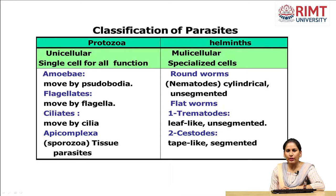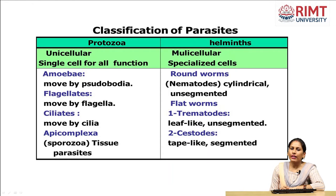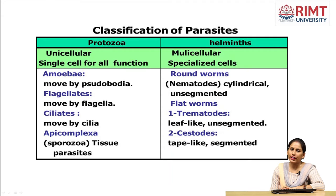Nematodes are cylindrical and unsegmented, also known as roundworms. Trematodes are leaf-like and unsegmented. Cestodes are tape-like and segmented.